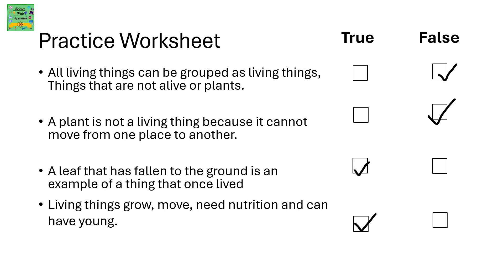Practice worksheet. All living things can be grouped as living things, things that are not alive, or plants — that is false. A plant is not a living thing because it cannot move from one place to another — that is also false; it is a living thing since it makes its own food. A leaf that has fallen to the ground is an example of a thing that once lived — true. Living things grow, move, need nutrition, and can have young — also true.